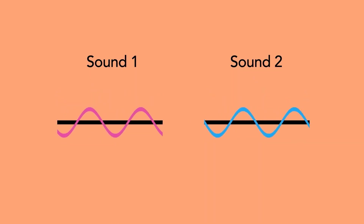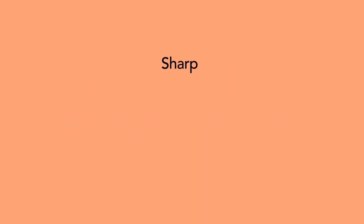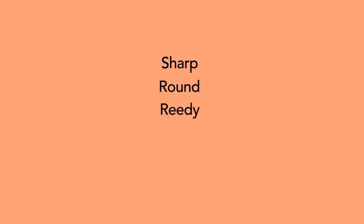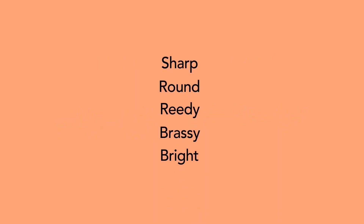When we're describing a sound's timbre, we use words like sharp, round, reedy, brassy, or bright to describe them.